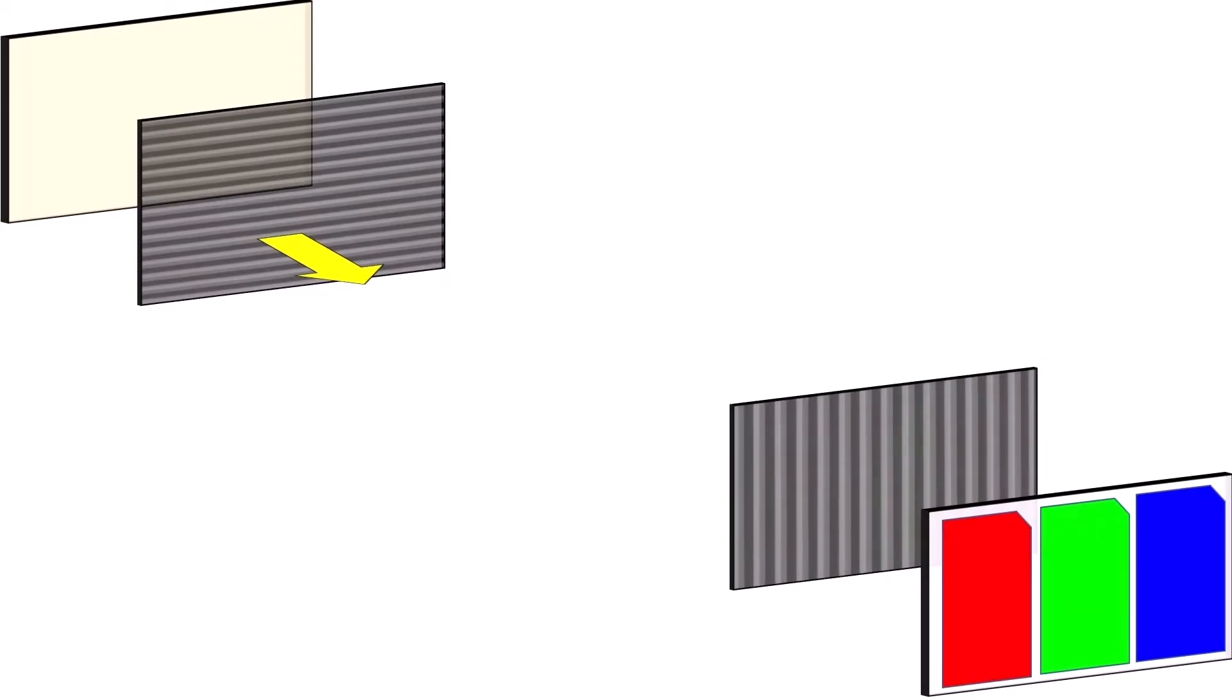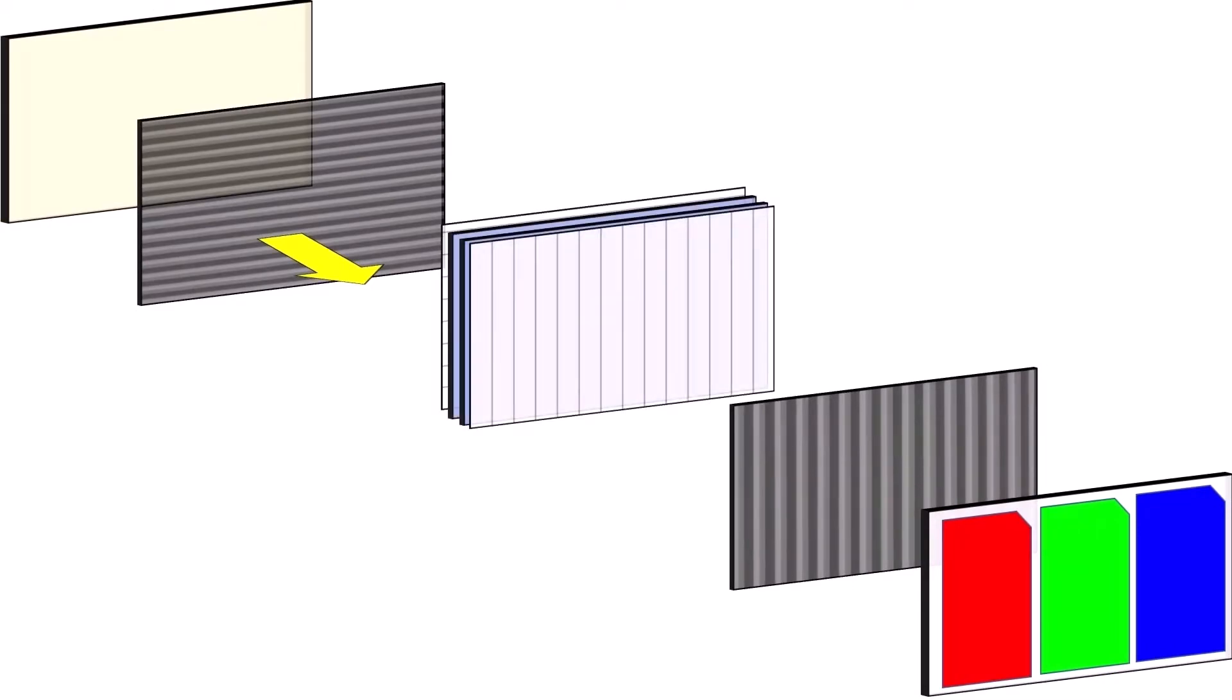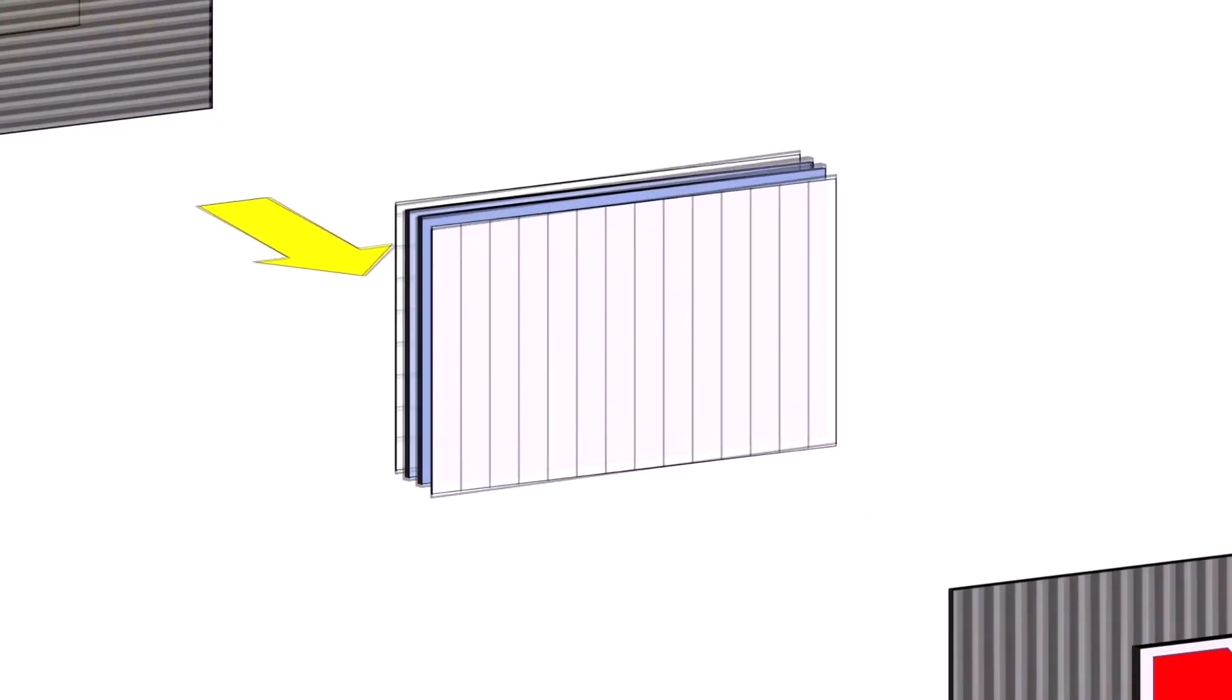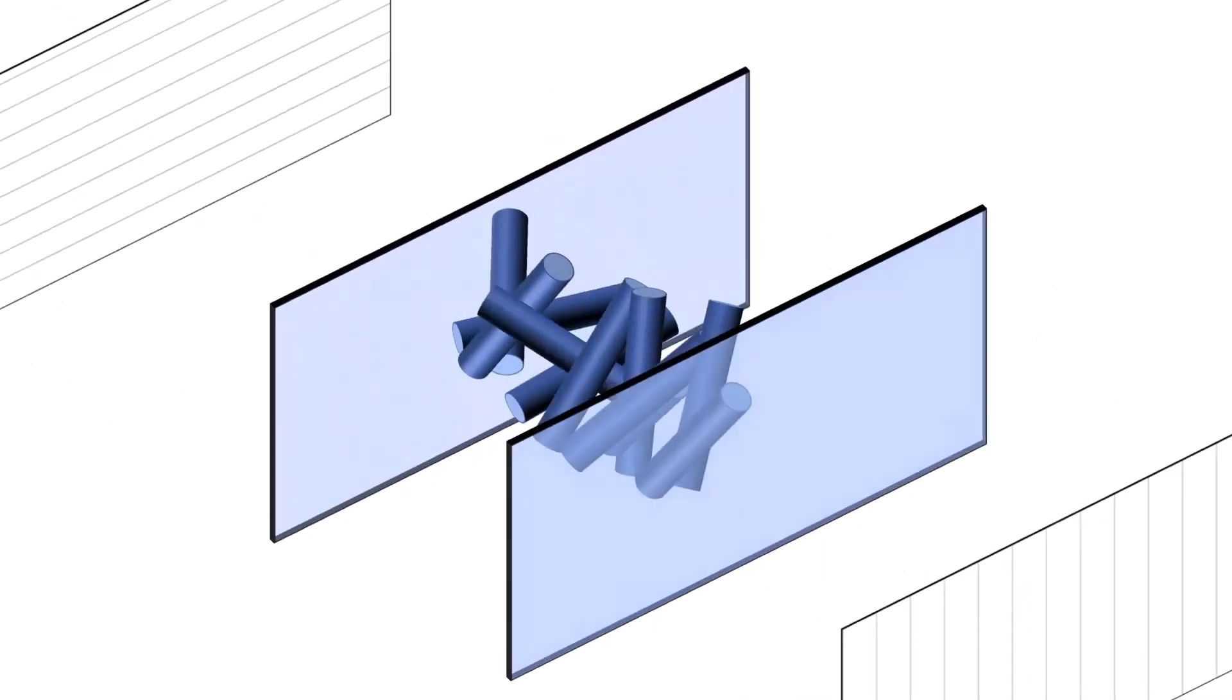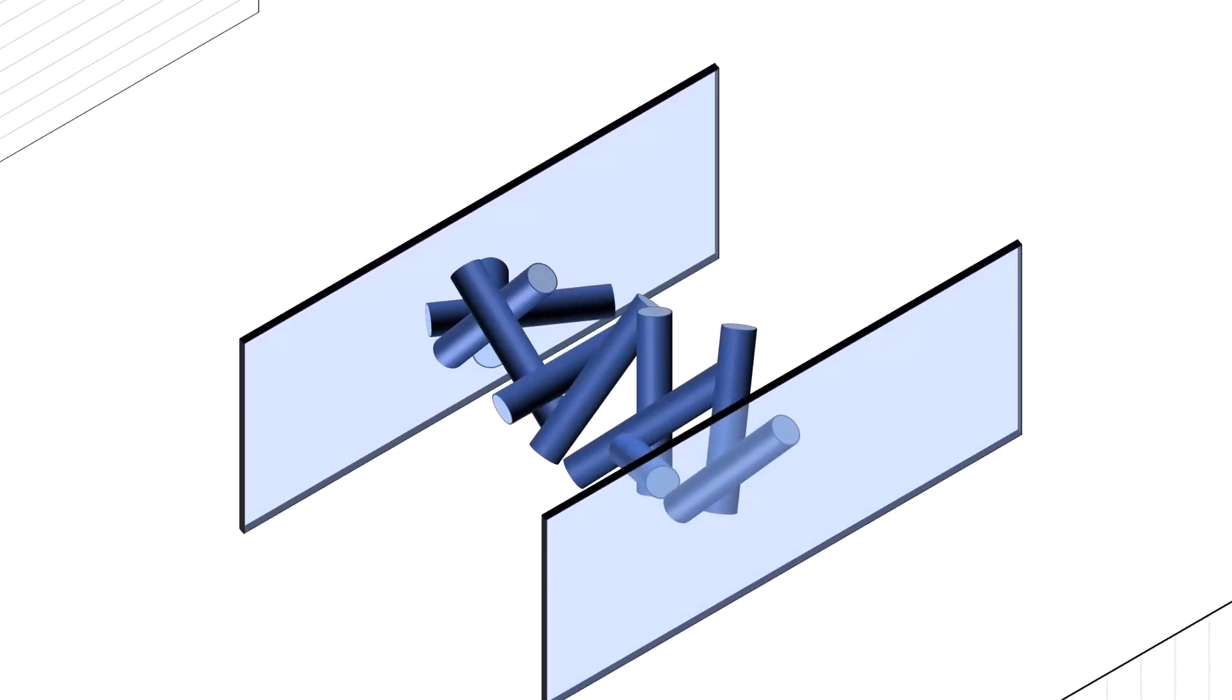So how does light travel from our displays to our eyes? The answer lies in our liquid crystal filter. Let's take a closer look. We can see our crystals in the middle there. And wow, they look like a mess.